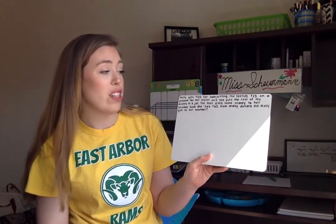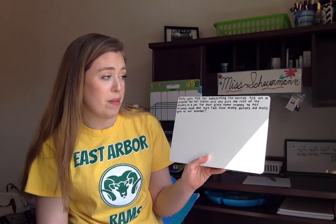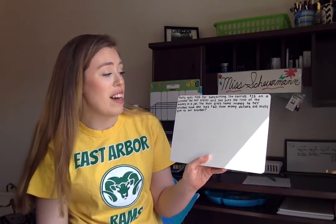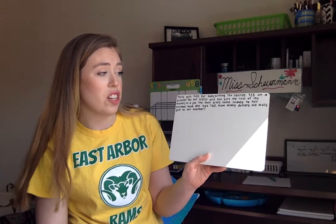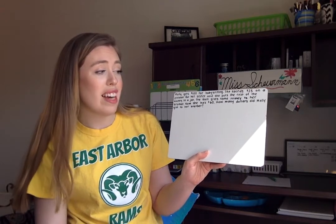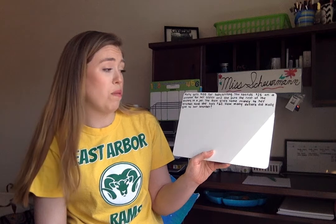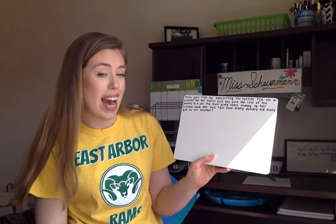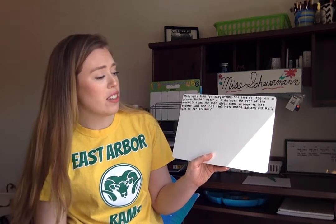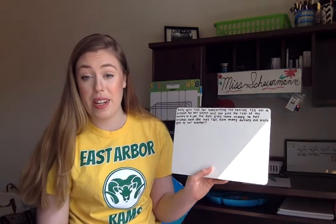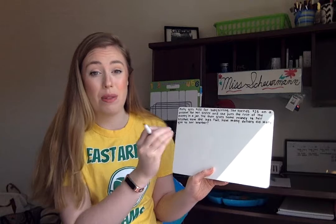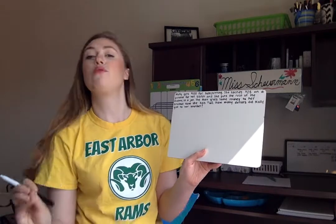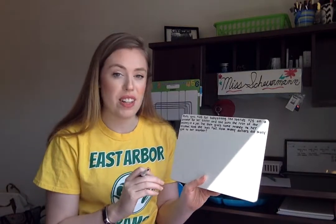Math story 6.11 today says: Molly gets $100 for babysitting. She spends $25 on a present for her sister and she puts the rest of the money in a jar. She then gives some money to her brother. Now she has $60. How many dollars did Molly give to her brother? Alright, this one is tricky. There is a lot in this problem — a lot of different words and different moving pieces. So let's break it down a little bit more.